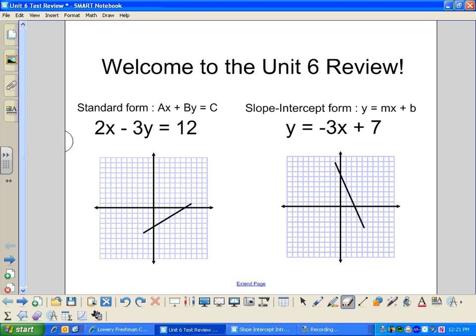Since this equation is in standard form right here, 2X minus 3Y equals 12, I can figure out what the intercepts are. So the X intercept is where my Y value is equal to 0. Since my Y value is equal to 0, 3 times 0 is 0, I can just get rid of this whole thing. I end up with 2X equals 12, that means X is equal to 6. So I know that on my X axis, I'm going to be plotting a 6.